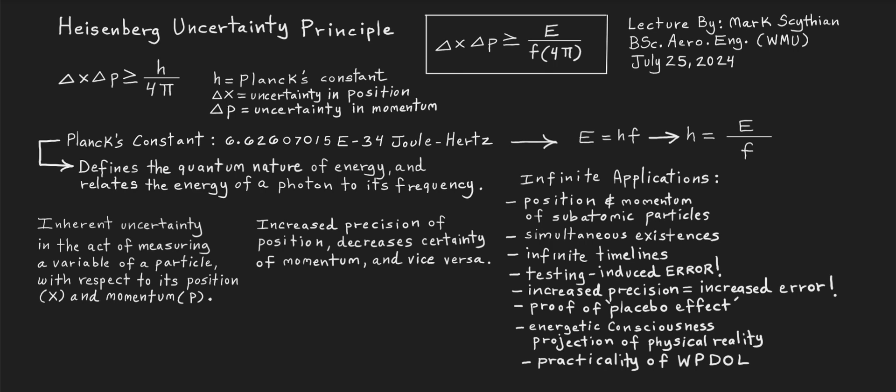If we rewrite the Heisenberg uncertainty principle with respect to the Planck's constant, combining the Planck relationship with energy and frequency, we then get the uncertainty redefined as the uncertainty in position delta x, uncertainty in momentum delta p, which favors a greater than or equal to the ratio of the energy divided into the frequency times constant of 4 pi.